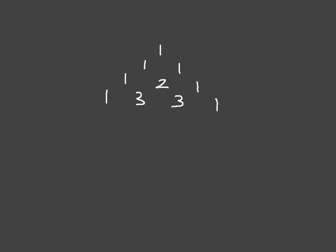And we carry on this way. To write the fourth line, we can see that we have 1 and 3. 1 plus 3 is 4, so we write a 4 right here. 3 plus 3 is 6, so we write 6 in between the two 3s on the line below them. And we have 3 plus 1 is equal to 4, so we write 4. Once more, we complete this line with a 1 on either end.